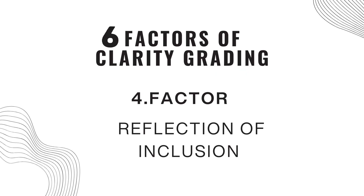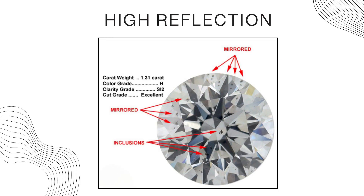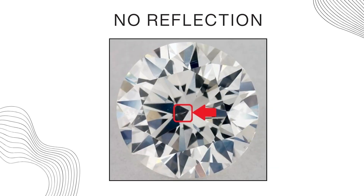The fourth factor is reflection. For example, if there is one inclusion inside a stone, it can appear to be many more because of the reflections present inside the stone. Even if the stone only has one inclusion, a lot of internal reflection could make it look like many different inclusions. It is really important to check whether a stone has high or low reflection — it's ideal to go for a stone with no reflections at all, so inclusions are not reflected many times and the stone looks very clear.